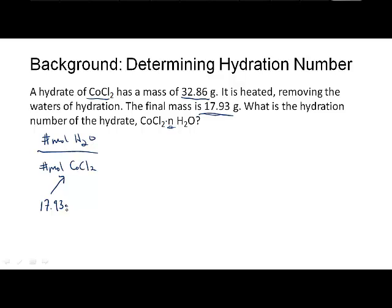17.93 grams of cobalt chloride times one mole over the molar mass of cobalt chloride, that's 129.84 grams, gives us 0.1381 moles of cobalt chloride.